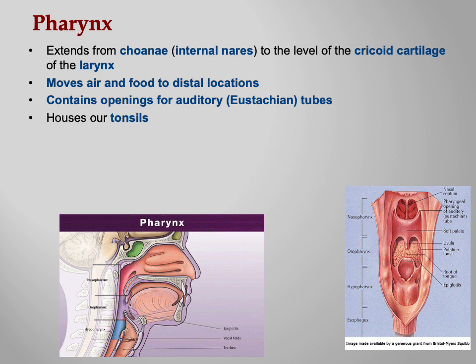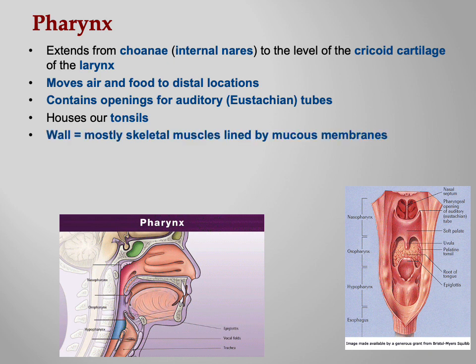Our tonsils are here — you have three sets. The pharyngeal tonsil is up behind your nasal cavity at the top of the nasopharynx. Then you have the two palatine tonsils, which we looked at during the lymphatic and immune system unit; they guard the entrance to the throat. And then you've got the lingual tonsils on the back of the tongue. The wall of the pharynx is mostly skeletal muscle lined by mucous membranes — mucous membranes to catch pathogens, and skeletal muscles for speaking and swallowing.